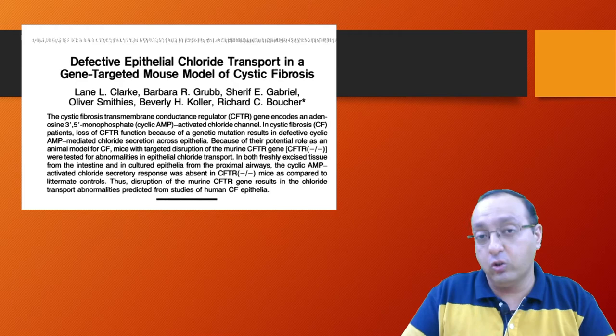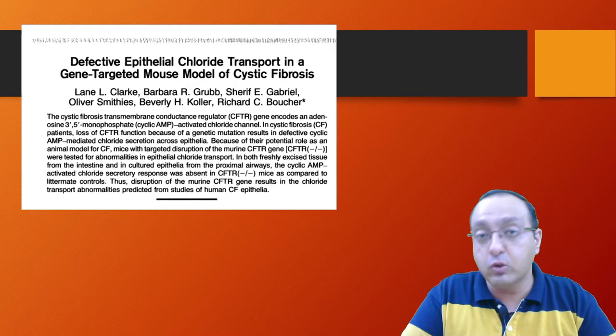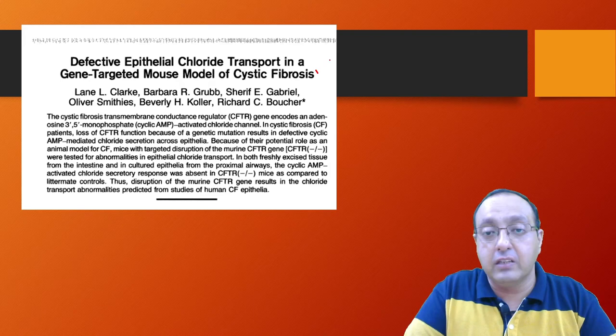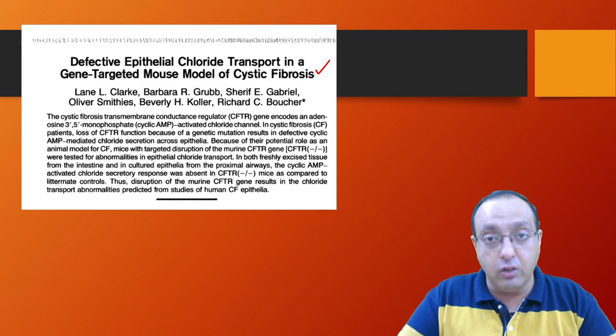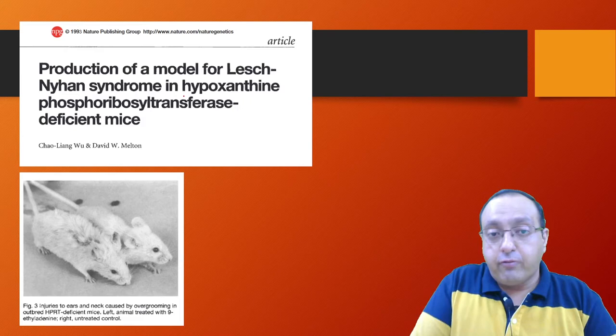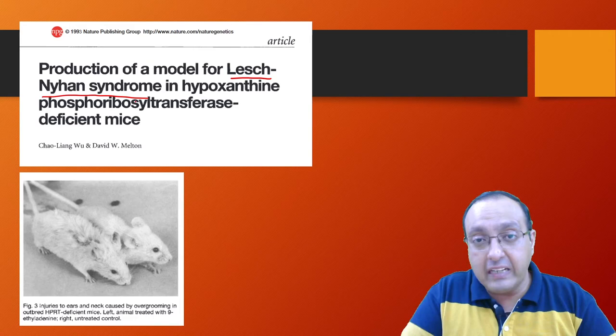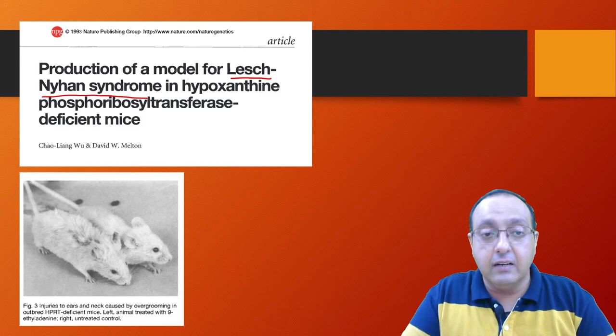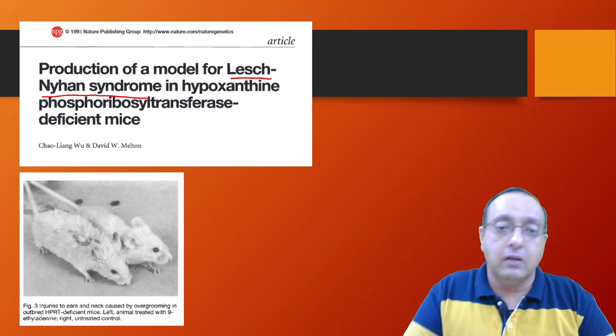And this technology has helped researchers in developing mouse models of several debilitating diseases. For example, here you can see a paper where they developed a mouse model of cystic fibrosis, which affects a lot of newborn children every year. The mouse models have been developed for Lesch-Nyhan syndrome, which is characterized by neurological abnormalities and there is impulsive biting and pulling of the skin in this disease.